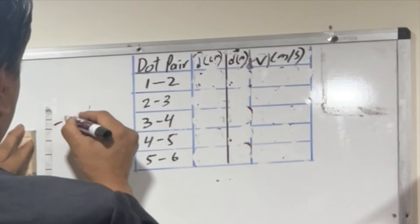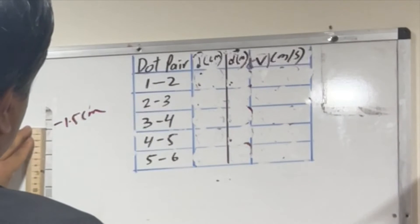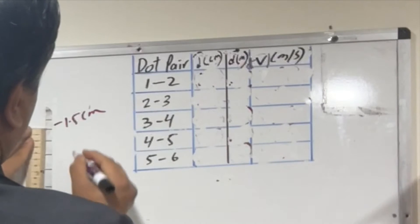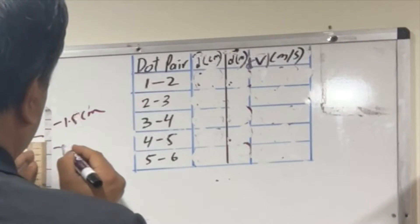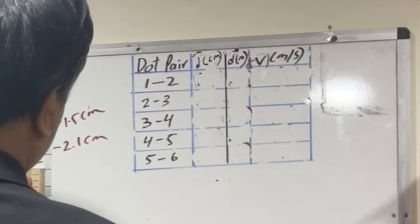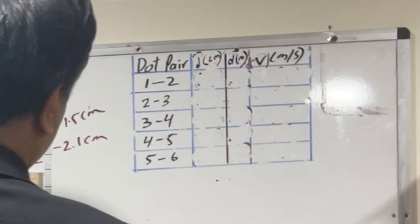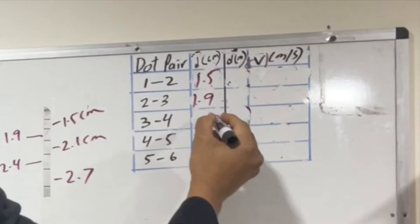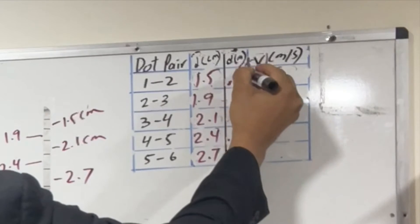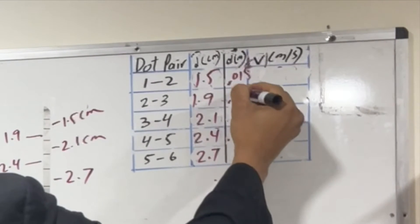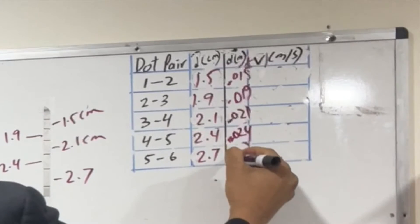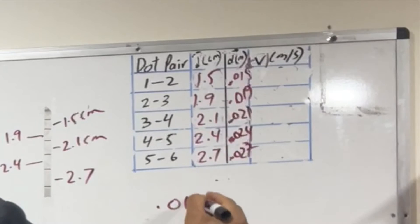Reading the measurements: this is 1.5 cm, this is 1.9 cm, this is 2.1 cm, this is 2.4 cm, and this is 2.7 cm. Converting to meters: 0.015, 0.019, 0.021, 0.024, and 0.027 meters.